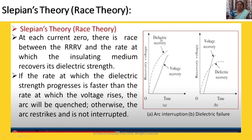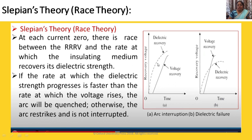By this diagram, you will get a clear idea of dielectric strength and restriking voltage. At each current zero, there is a race between the rate of rise of restriking voltage and the rate at which the insulating medium recovers its dielectric strength. If the rate at which dielectric strength progresses is faster than the rate at which voltage rises, the arc will quench; otherwise the arc will strike and is not interrupted. In the first graph, you can see the dielectric voltage is on the upper hand over the voltage recovery — meaning dielectric strength is greater than the restriking voltage — and arc interruption occurs.